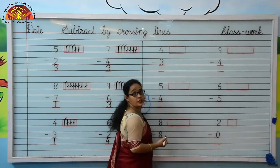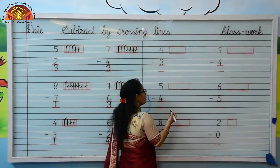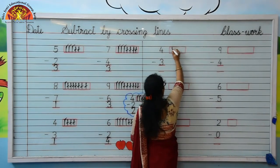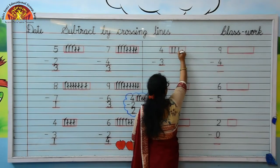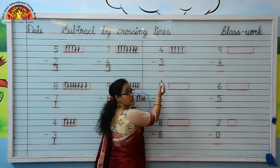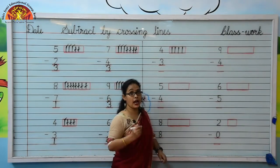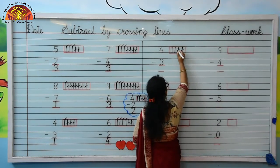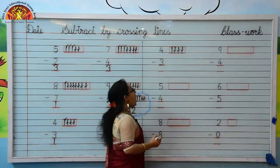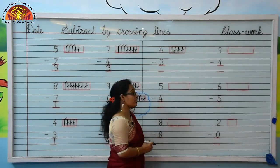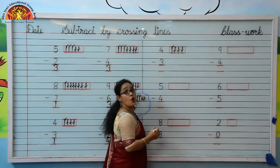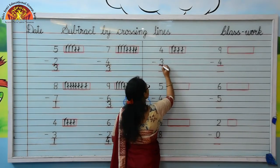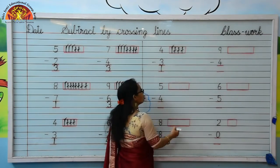Which number is written here? Yes, 4. Kids, how many lines should I draw here? Yes, 4. Let's draw with me: 1, 2, 3, 4. The downside is 3. Kids, we will cross 3 lines from 4 lines. Let's cross with me: 1, 2, 3. Kids, how many lines are left? Let's count: 1. Yes, 1 is left here. So kids, your answer is 1. Move to next.